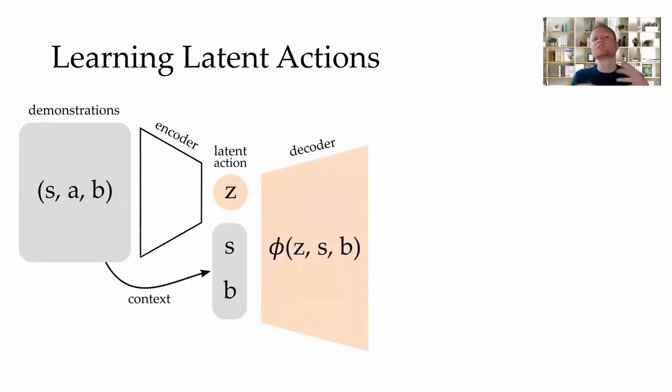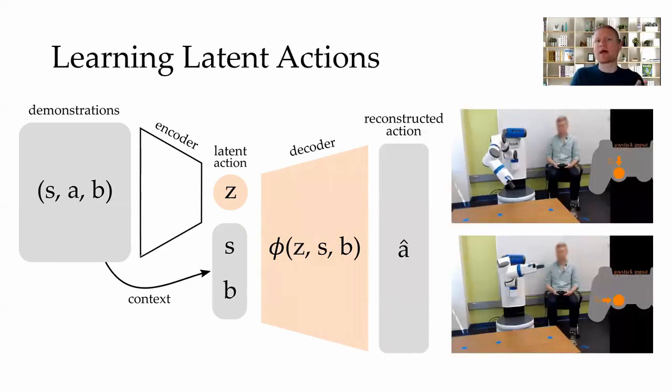The robot decodes the meaning of the user's latent action based on its current context. This context includes the system state, as well as the robot's belief over high-level goals. Ultimately, the robot maps the user's low-dimensional input to a high-dimensional action. And this reconstructed action should match the demonstrated actions.